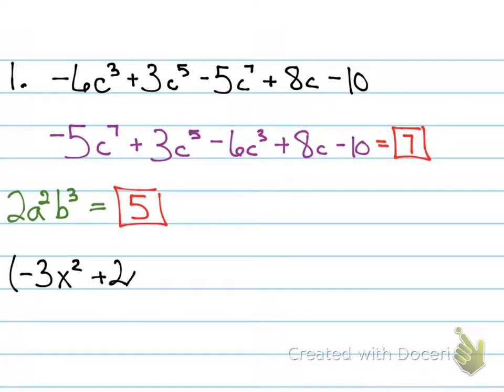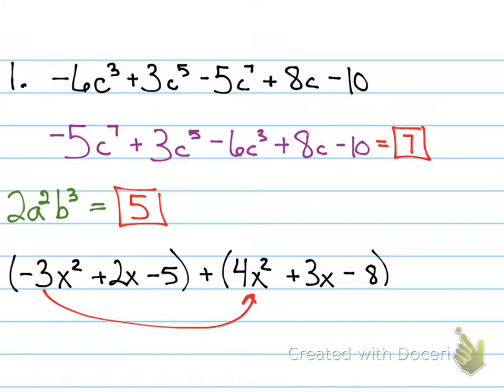Alright, so on the next one, I want you to now add these sets of polynomials together. So, we're simplifying the polynomial through addition. What are we doing here? Here, we're simplifying the like terms. In order to be a like term, it has to have the same exponential value with the variable.